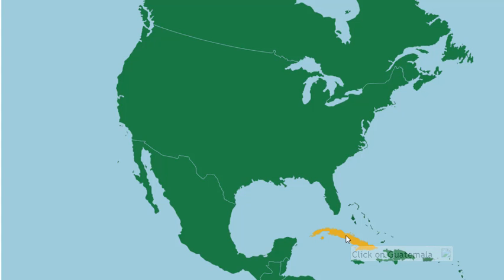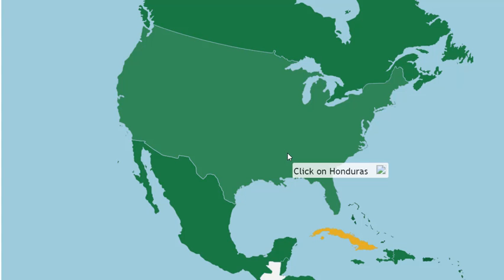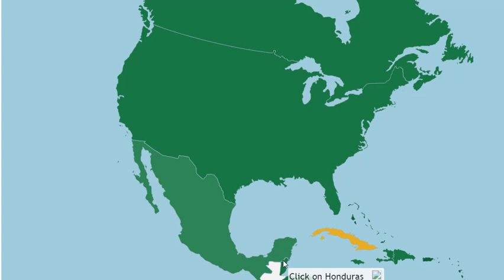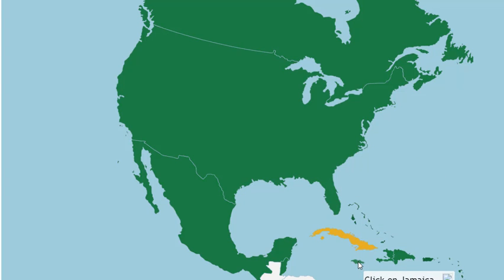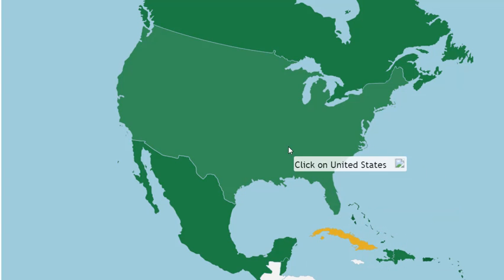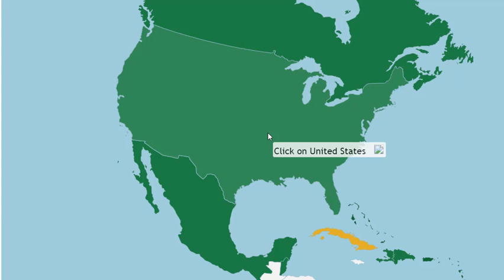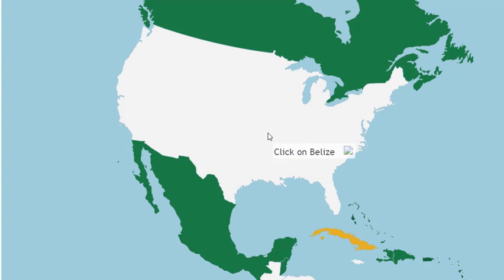Now he is saying we had to click on Guatemala, so I think this is Guatemala, fine. Now he is saying Honduras — I think this is Honduras. This one is also Jamaica, so I think this country is Jamaica. Good. United States — this is the third largest country in the world.